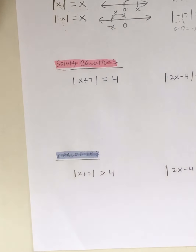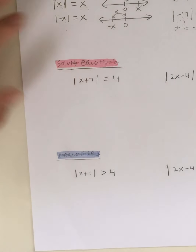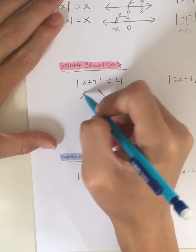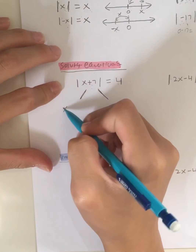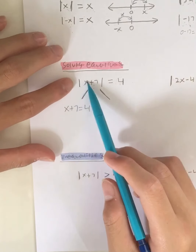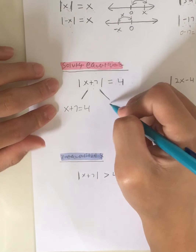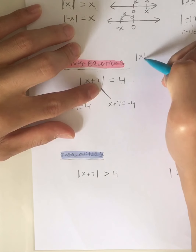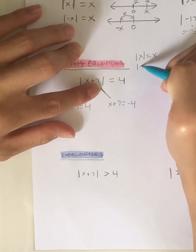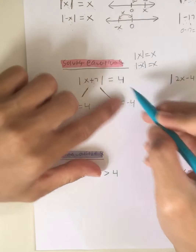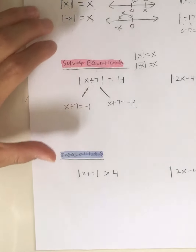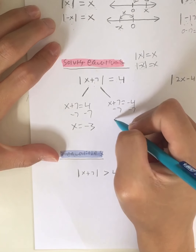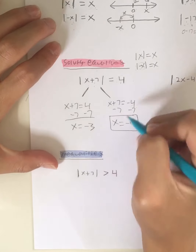Now let's move on to solving absolute value equations. For example, the absolute value of x plus 7 equals 4. We break this into two equations: x plus 7 equals 4 — we just remove the absolute value signs — and x plus 7 equals negative 4, because the absolute value of negative x can also equal x. Solving both: subtract 7 gives x equals negative 3 and x equals negative 11.